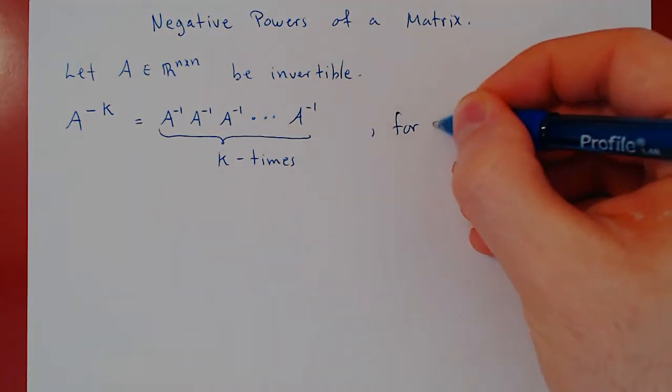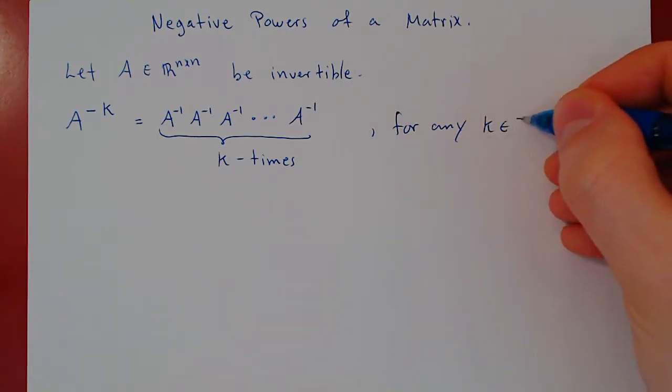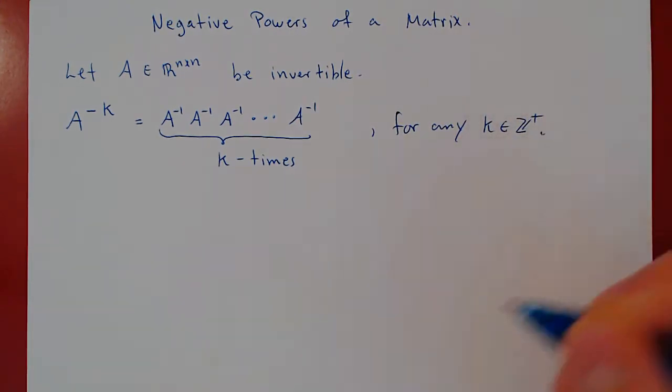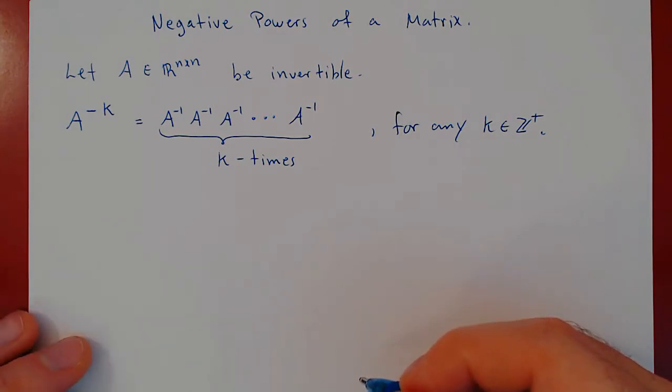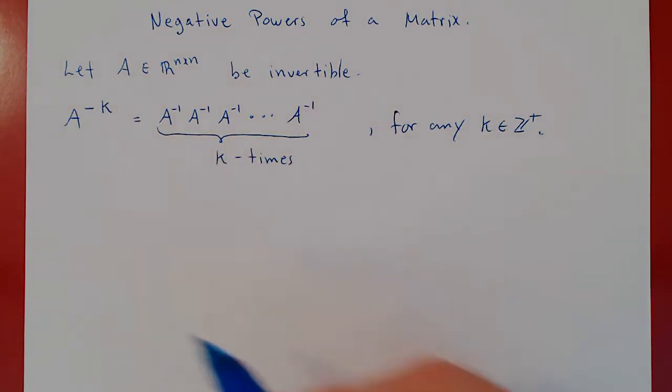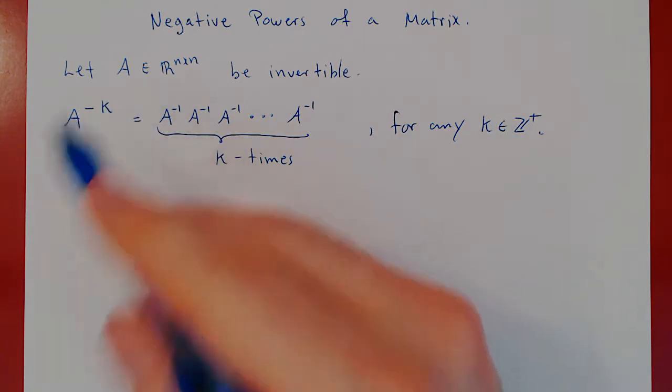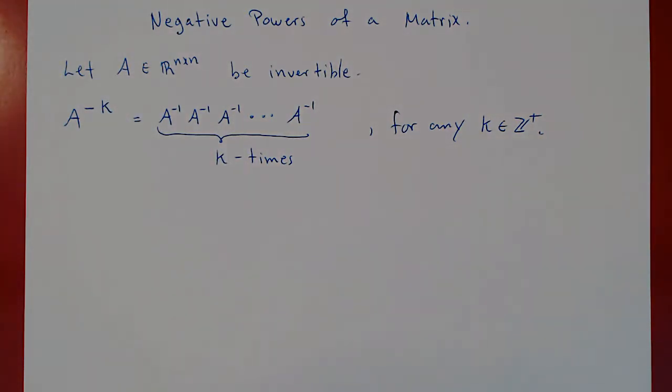And this is for any positive integer k. And it's a very natural definition of a negative exponent, only, of course, if A inverse exists. If A inverse does not exist, a negative integer power of the matrix is not defined.